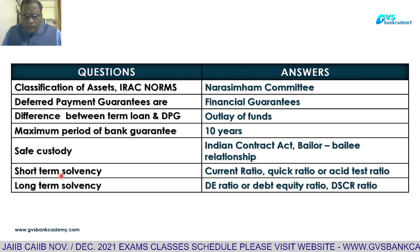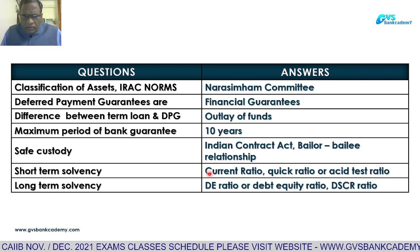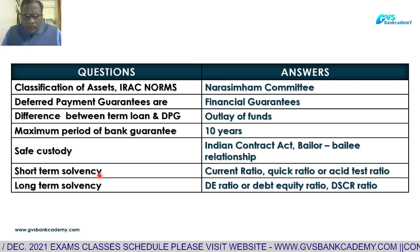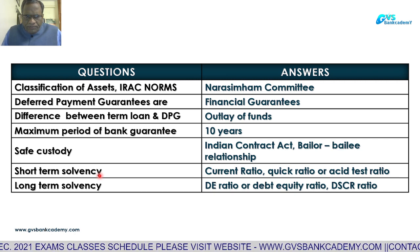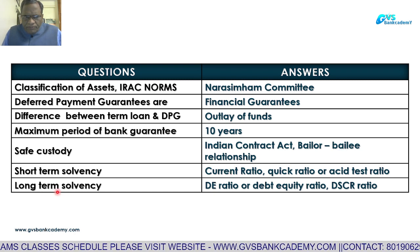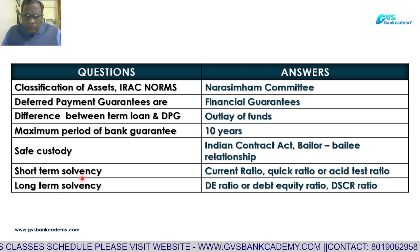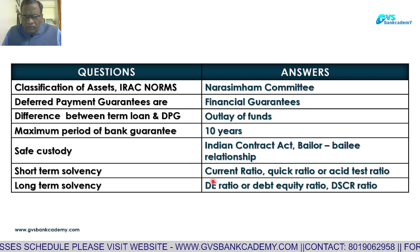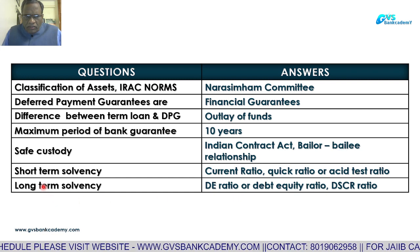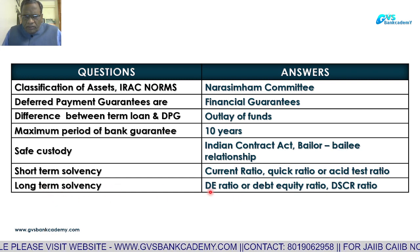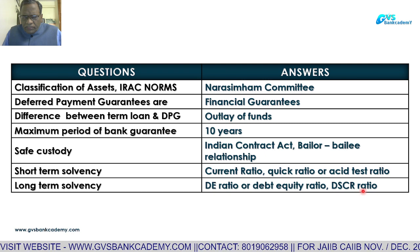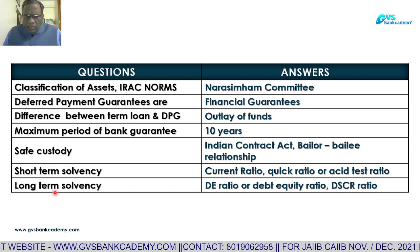Short-term solvency means the current ratio, quick ratio, or acid test ratio will determine whether the firm can meet its obligations in the short term — normally up to one year. Short-term solvency can be judged through current ratio or quick ratio or acid test ratio. Long-term solvency can be judged through debt-equity ratio or debt service coverage ratio.